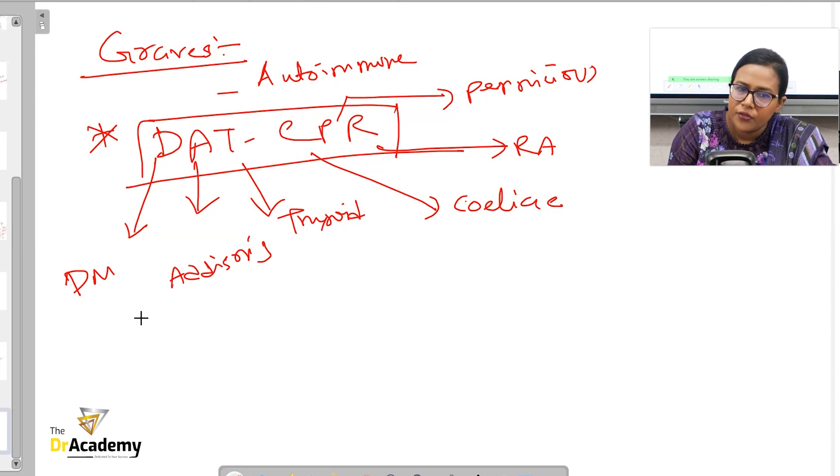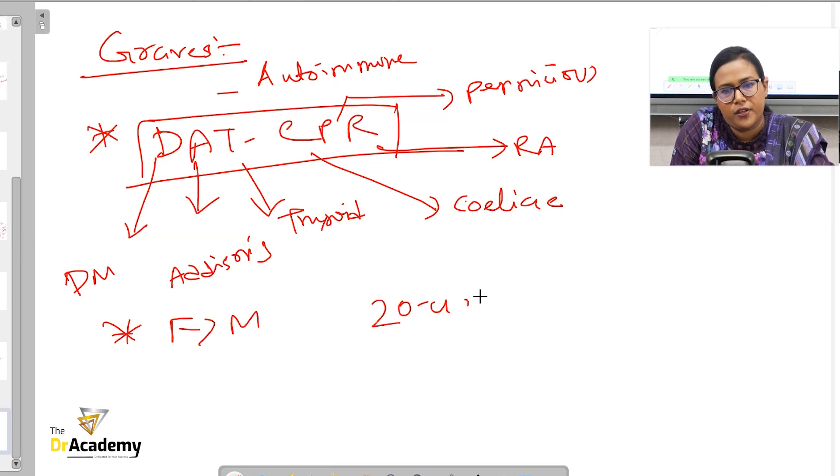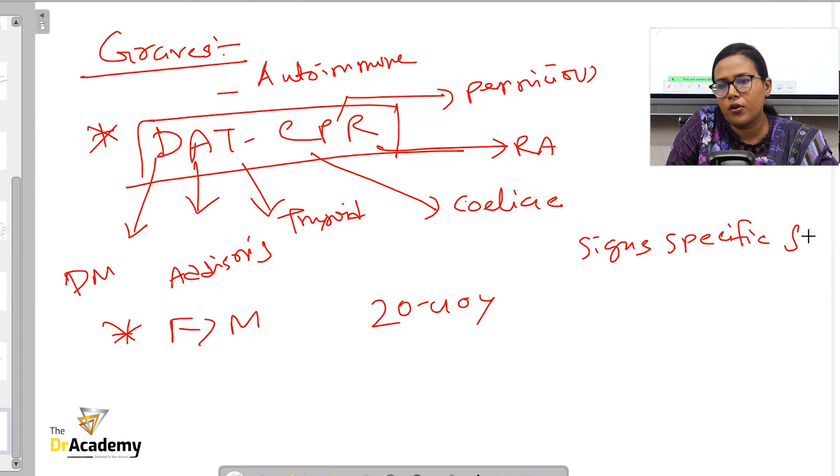And just like any other autoimmune condition, you'll see the prevalence, particularly the thyroid problems, the prevalence is more in the female rather than the males. And Graves disease, the onset usually takes place within 20 to 40 years. So young adult people are more prone to developing or having the active signs and symptoms of Graves disease. So in Graves disease, you will get all the features related to hyperthyroidism, but there are very specific signs that are only found in Graves disease, but not in other causes of hyperthyroidism. What are those signs?